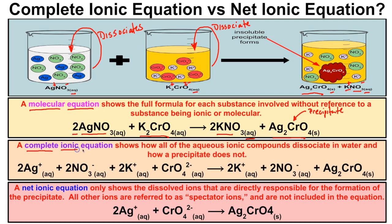From the molecular equation we can write a complete ionic equation, which shows how all of the aqueous ionic compounds dissociate in water and how a precipitate does not. On the reactant side, two moles of silver nitrate dissociate into two moles of silver ions and two moles of nitrate ions in water. One mole of potassium chromate dissociates into two moles of potassium ions and one mole of chromate ions in water.